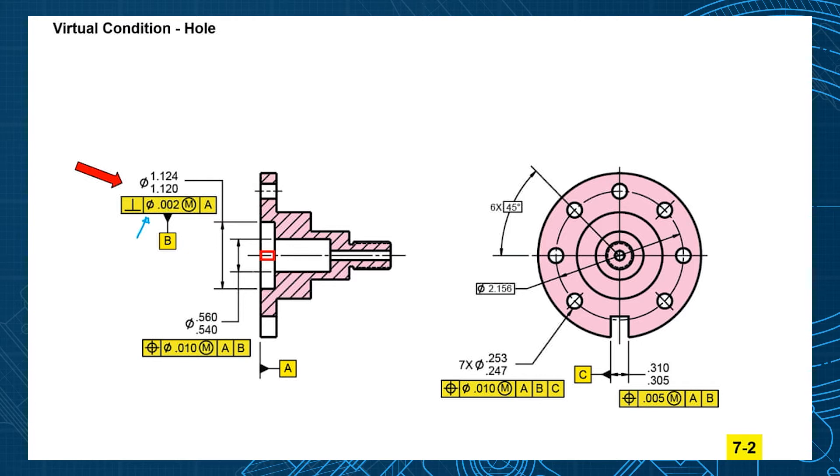Now that means the axis of the hole can tilt within that cylinder. It could enter the tolerance zone here and exit the tolerance zone there. Now if the axis of the hole were tilted, really the size of the hole would be tilted like this too.